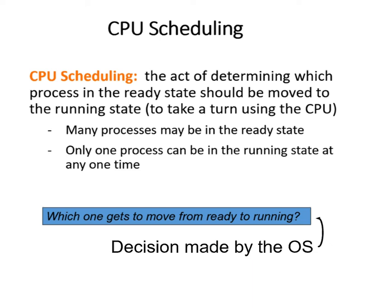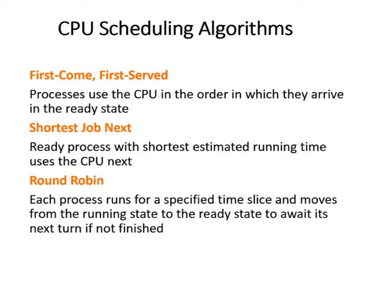CPU scheduling algorithms — a little vocabulary. First come, first served: processes use the CPU in the order that they arrive in the ready state. Shortest next job: the ready process with the shortest estimated running time uses the CPU next. And round robin: each process runs for a specific amount of time — a slice of time — and then moves from the running state to the ready state to await its next turn if it's not finished.